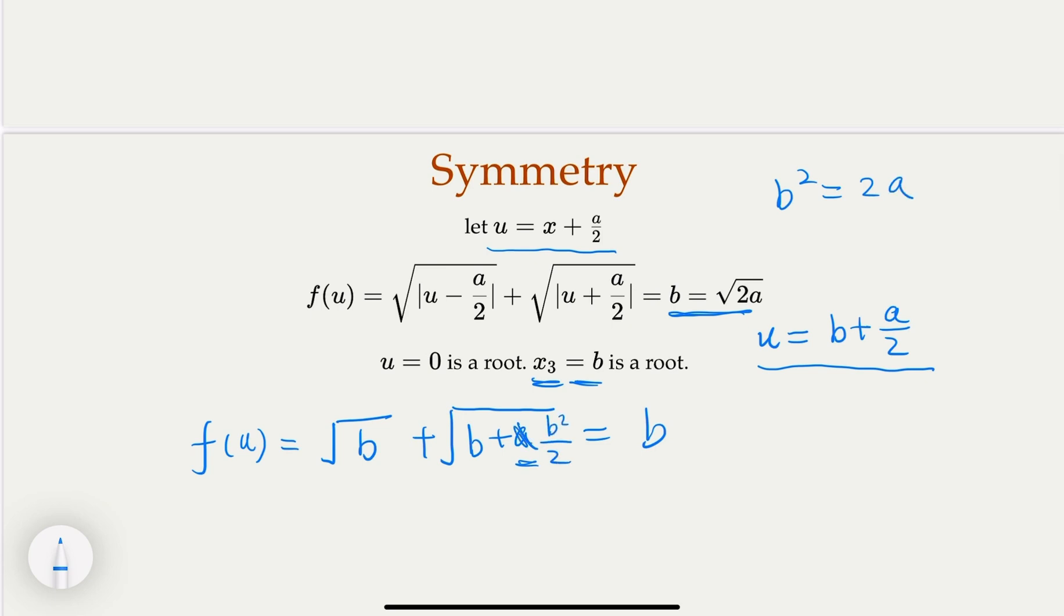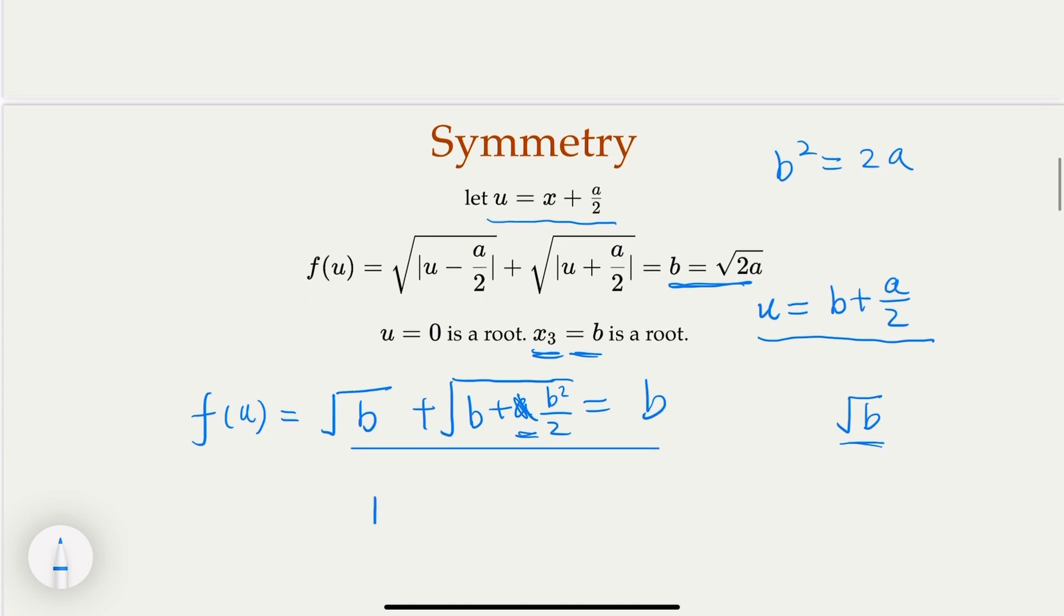Now notice that b is greater than 0, so we're going to divide both sides by square root of b. So what do we get? This equation here, right? We're going to divide square root of b on both sides.